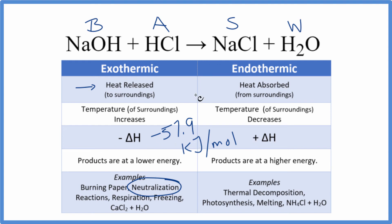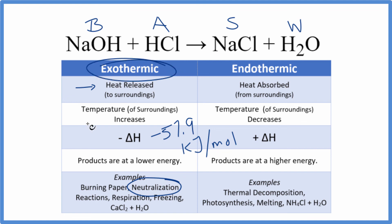Finally, the products of the reaction will have a lower energy than the reactants. We lost that heat energy, so the products will have a lower energy. This is Dr. B answering the question whether NaOH plus HCl is endothermic or exothermic — it is exothermic. Thanks for watching.